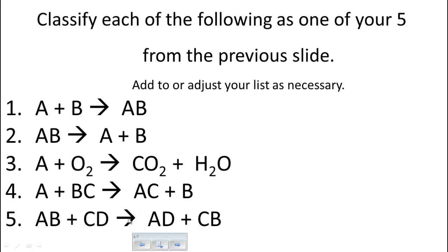For the fifth scenario — double replacement — let's say A and B represent Kyle and Christina dancing together, and C and D represent Austin and Danielle dancing together. Then Kyle and Austin decide to switch, so Kyle dances with Danielle and Austin dances with Christina. There are two replacements going on: Austin replaces Kyle and Kyle replaces Austin — they replace one another.